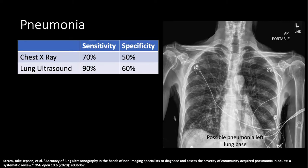Let's start with pneumonia. Lung ultrasound is much more sensitive for picking up pneumonias compared to chest x-ray. For instance, this was a patient who had a cough, shortness of breath, and fever. He was tachycardic to 135 beats per minute, tachypneic with a respiratory rate of 40, and sat at 90% on room air. He complained of sputum and pleuritic chest pain.